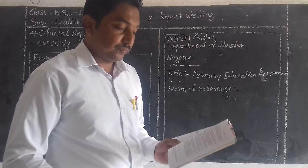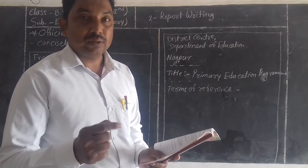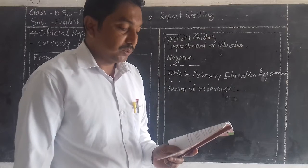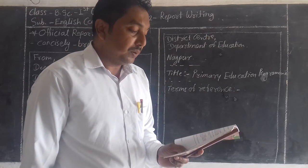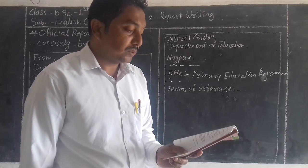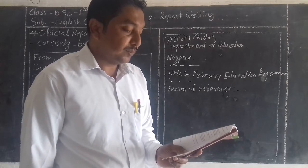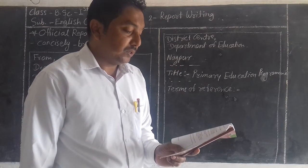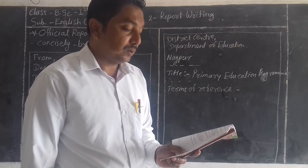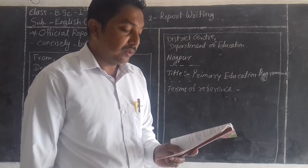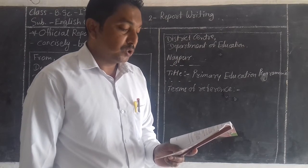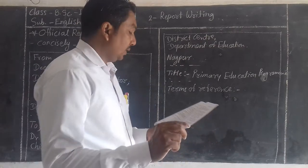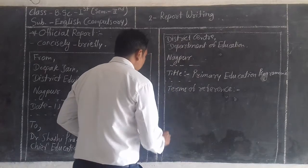The next point is conclusion or recommendation, where the authority gives some recommendations or suggestions. For example: The government program for improving primary education in the state seems to have succeeded in Nagpur district. It is recommended that permission be granted for the recruitment of more trained teachers and for the allocation of funds for the renovation of school buildings in the villages where this study was conducted. After the conclusion or recommendation, we write the signature of that person.